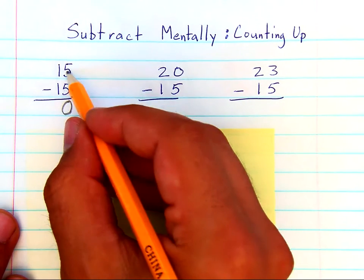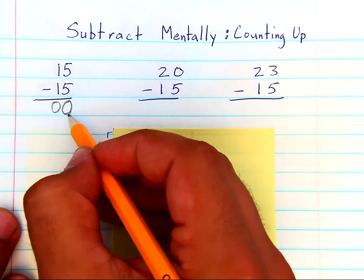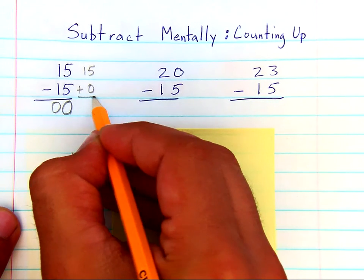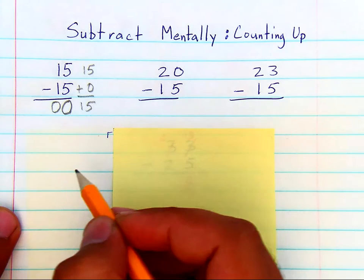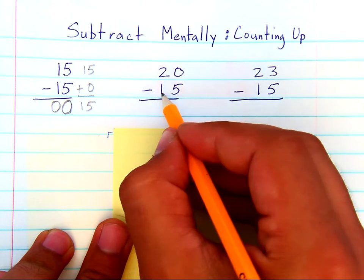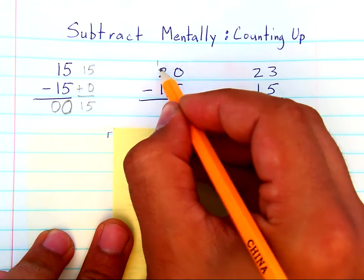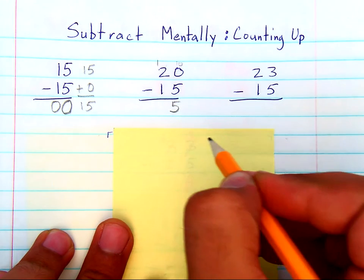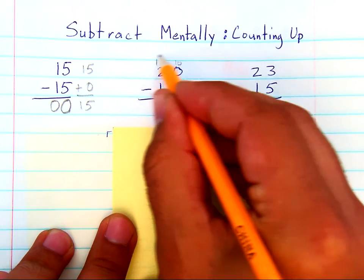If you were teaching the standard algorithm, five minus five is zero, one minus one is zero, so this one isn't too difficult to understand as far as subtraction is concerned. Even if you add five to the top — twenty minus fifteen — normally you would need to borrow: take a ten away from here and put it here, subtract ten minus five and get five, one minus one and get zero.